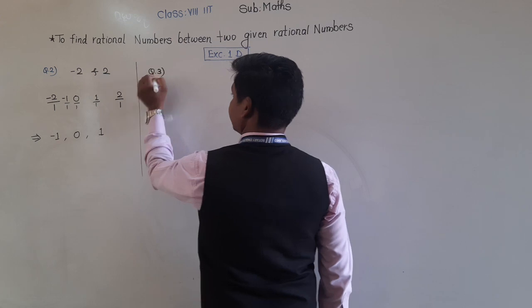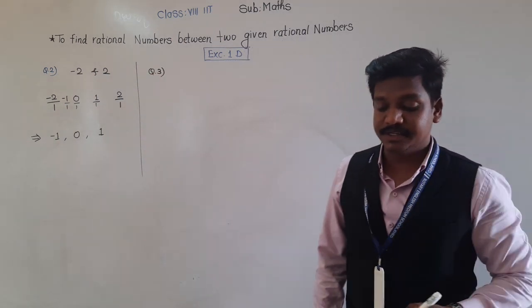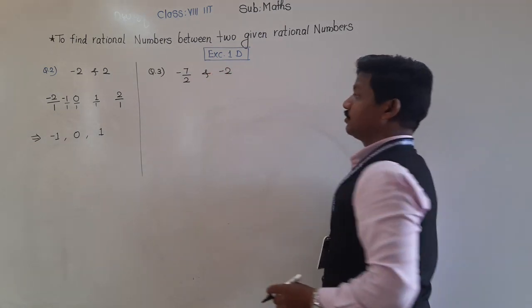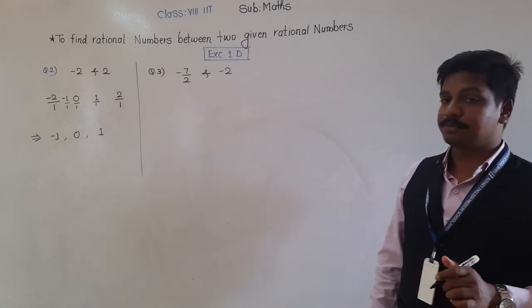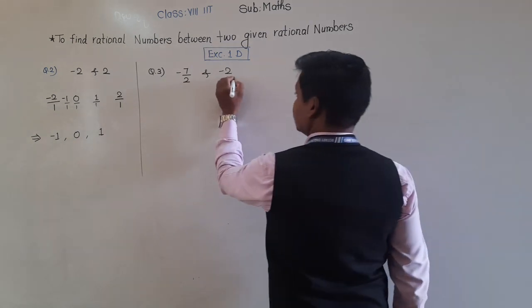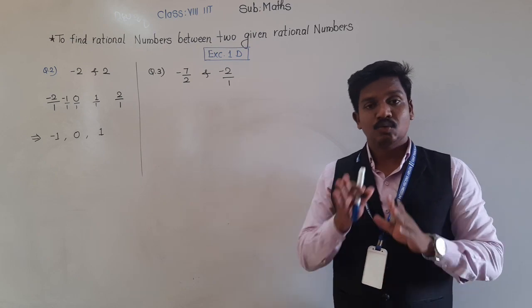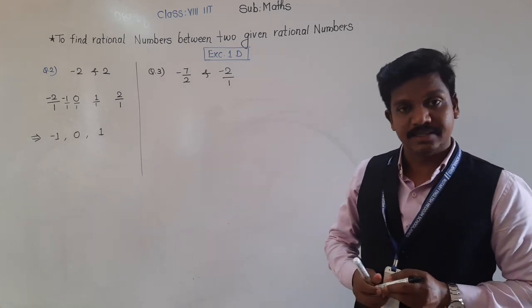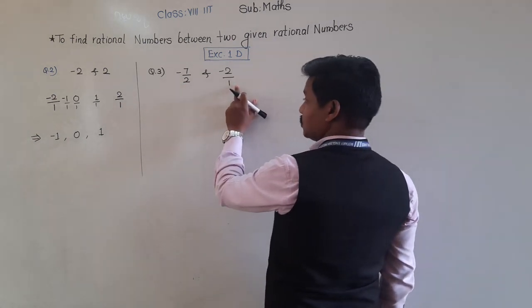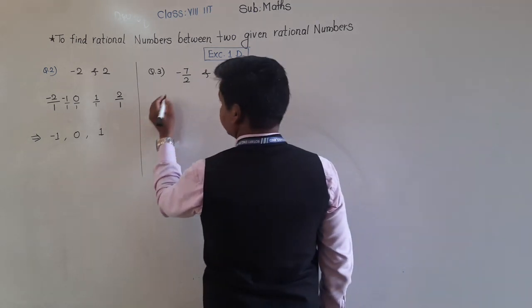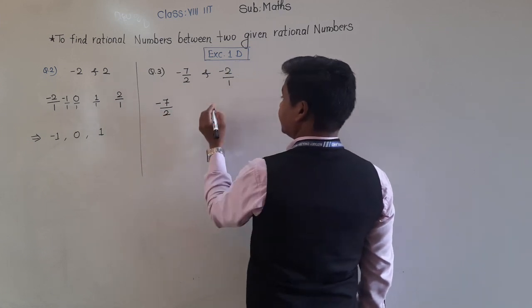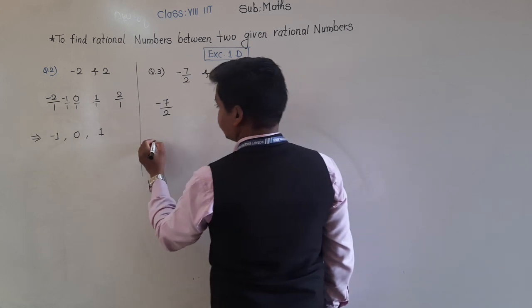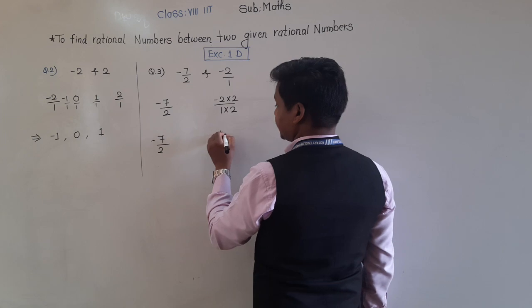Question 3: find three rational numbers between −7/2 and −2. First, make the denominators equal. The LCM of 2 and 1 is 2. So −7/2 stays as is, and −2/1 becomes −4/2. Now we have −7/2 and −4/2.